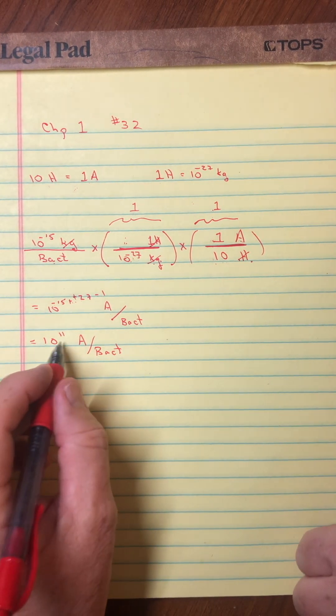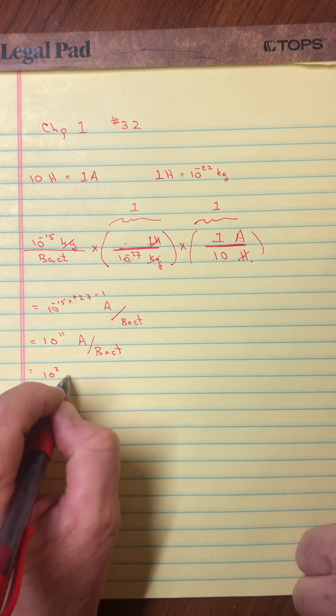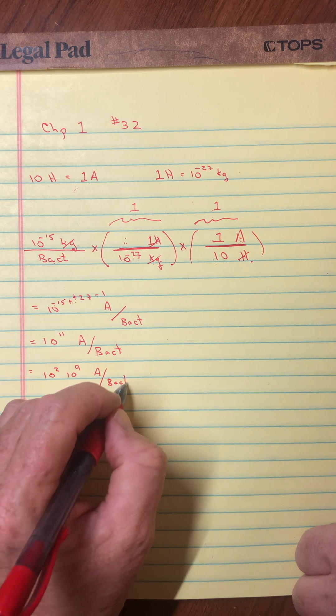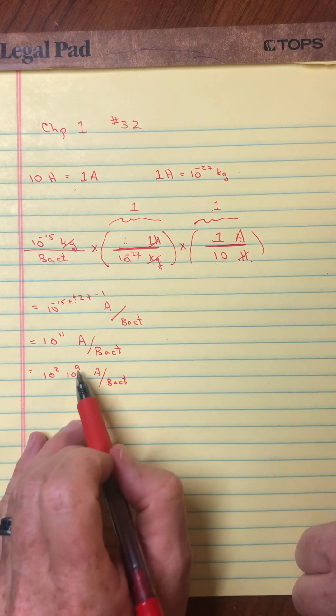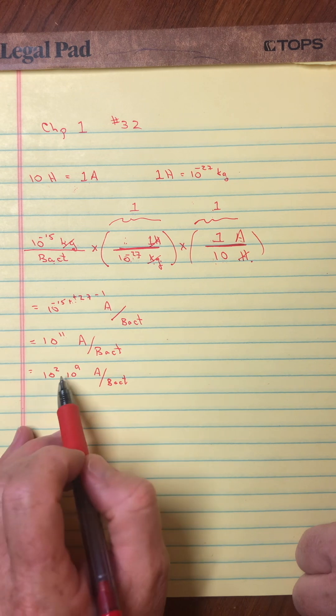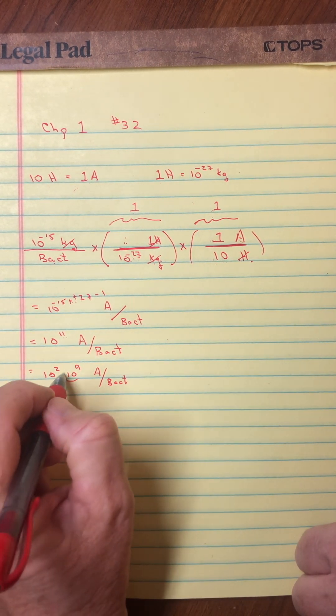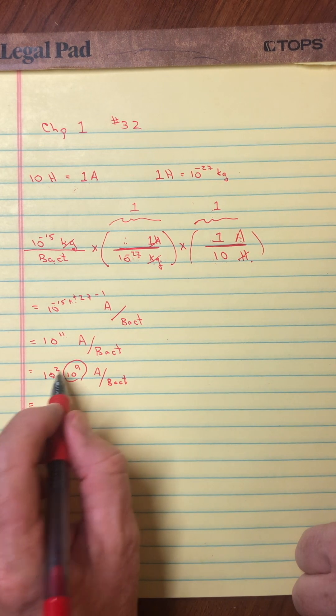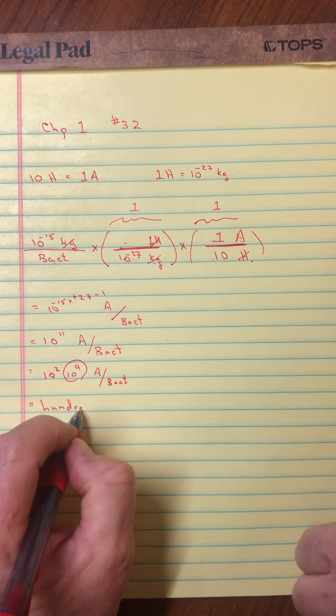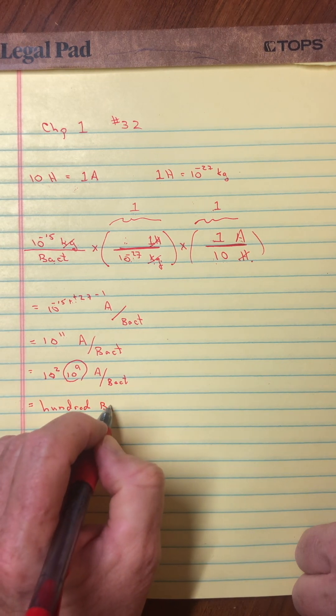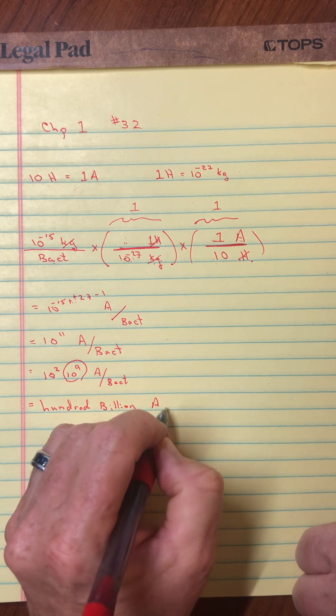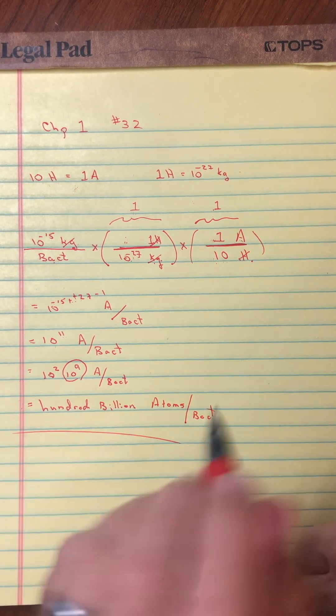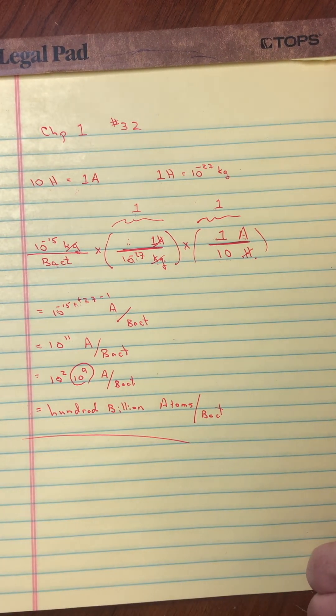And I suppose if we wanted to write that out, we could write that as kind of an interesting unit conversion here. I just kind of separated 10 to the 11th into a 9 and a 2. I like the 9 because 10 to the 9 is a billion, and 10 squared is 100. So in words, this would be a hundred billion atoms per bacterium. All right, hope that was helpful to someone. Take care.